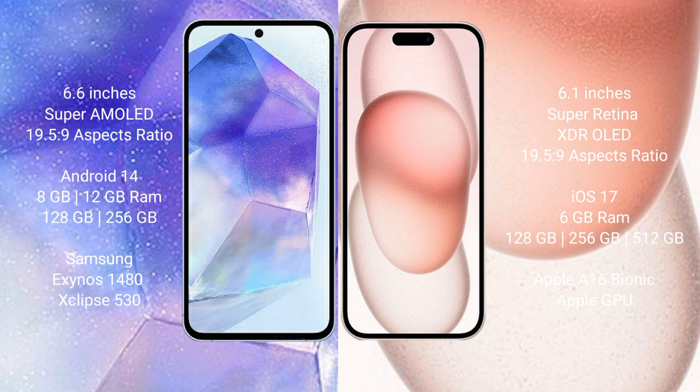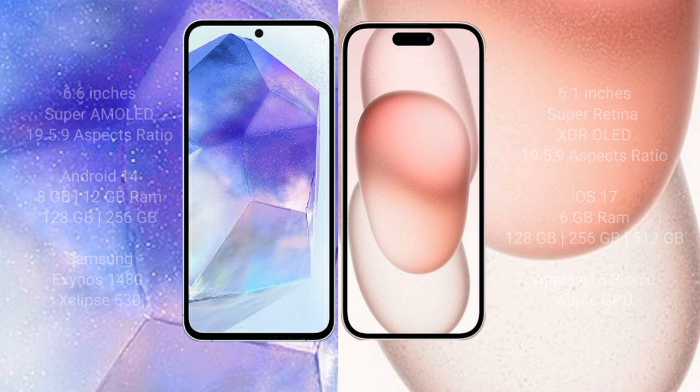Samsung Galaxy A55 comes with 8GB or 12GB RAM and 256GB internal storage, powered by the Exynos 1480 processor and GPU chipset. iPhone 15 comes with 6GB RAM and 128GB, 256GB, or 512GB internal storage, powered by the Apple A16 Bionic processor and Apple GPU.